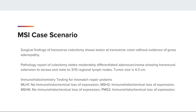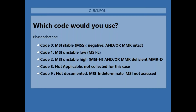Let's add the MSI testing to the previous case scenario and then we'll take a poll. Immunohistochemistry testing for mismatch repair proteins: MLH1 — no immunohistochemical loss of expression; MSH2 — immunohistochemical loss of expression; MSH6 — no immunohistochemical loss of expression; PMS2 — immunohistochemical loss of expression. Which code would you use? Take a moment to select your answers.